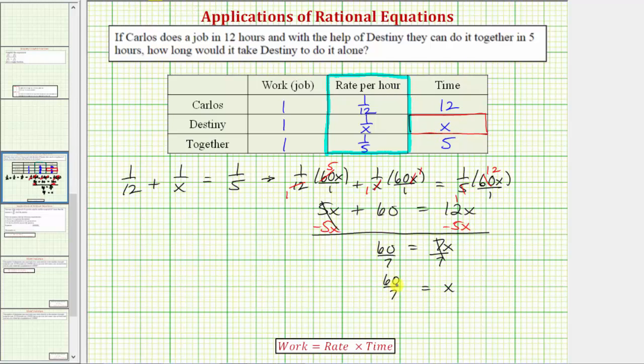Now it does seem a little strange to enter time as an improper fraction, but this is how we enter our answer. But let's also write this improper fraction as a mixed number. So we'll take sixty and divide by seven. There are eight sevens in sixty. Eight times seven is fifty-six. Subtract. The difference is four. So x is also equal to eight and four-sevenths. So we'll say Destiny can complete the job alone in sixty-sevenths hours, which equals eight and four-sevenths hours.